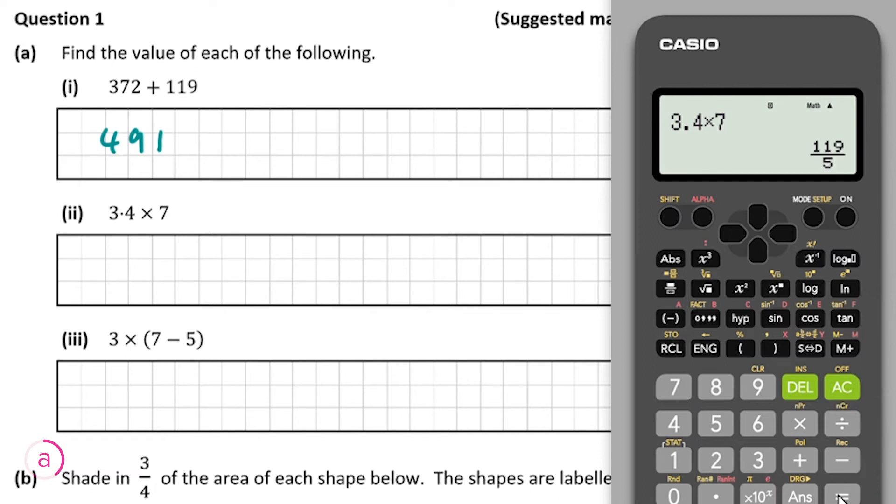Then pressing equals we're going to get this 119 over five on most calculators you're going to be working with. However, we don't want our answer like that. We actually want our answer in decimal form, so in other words we want something point something.